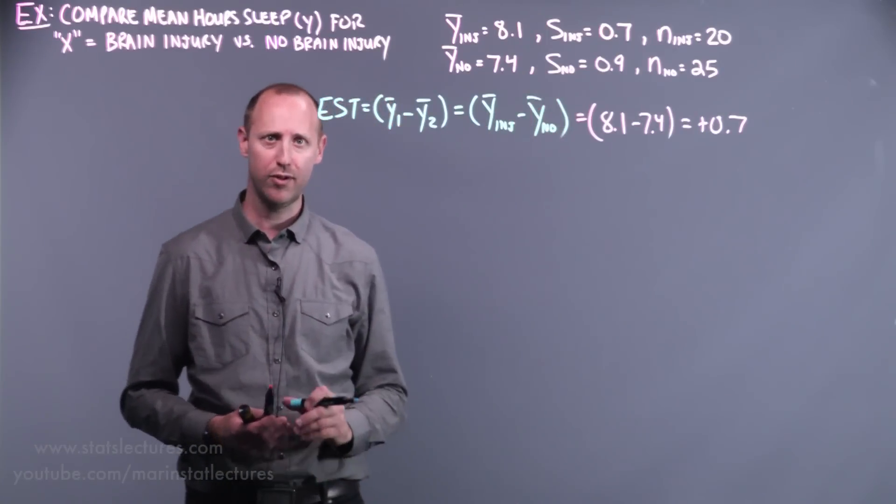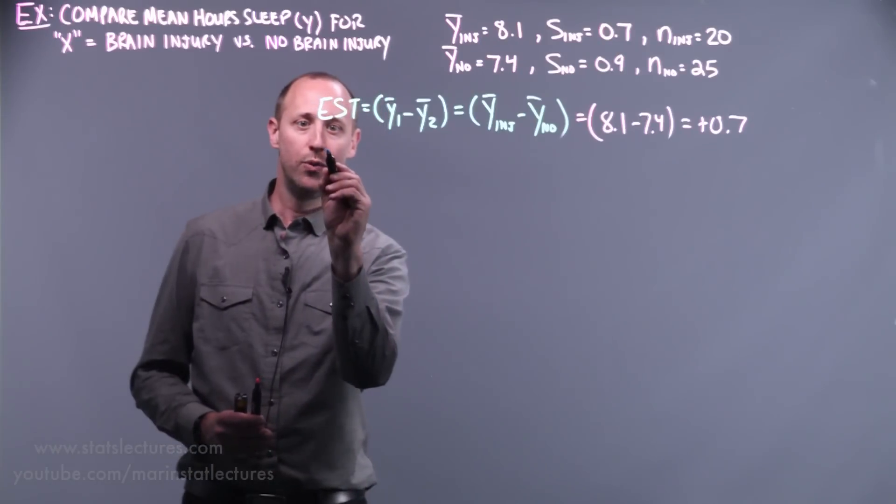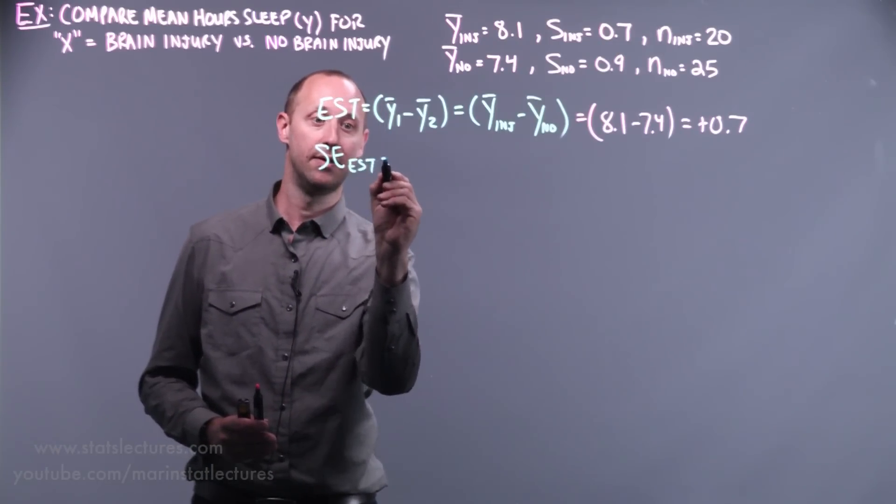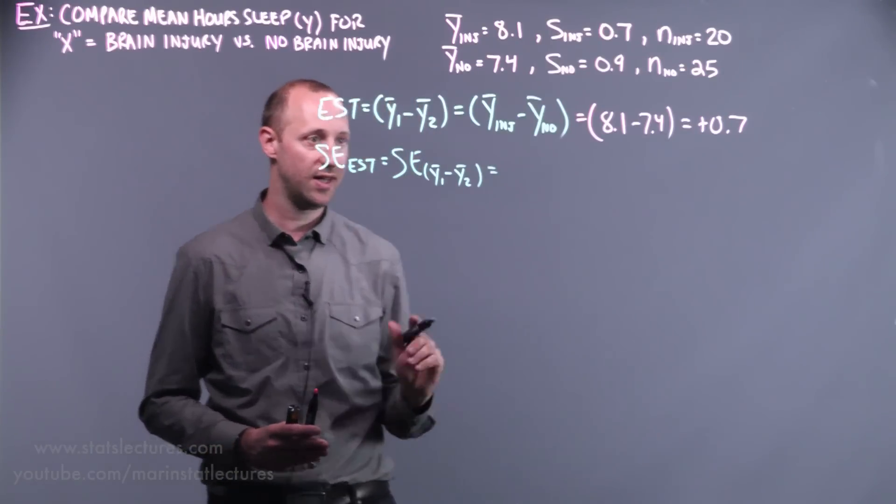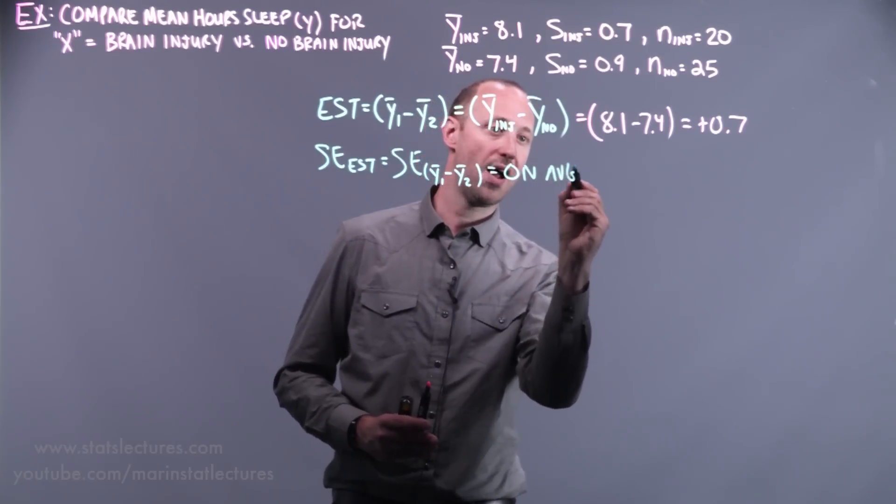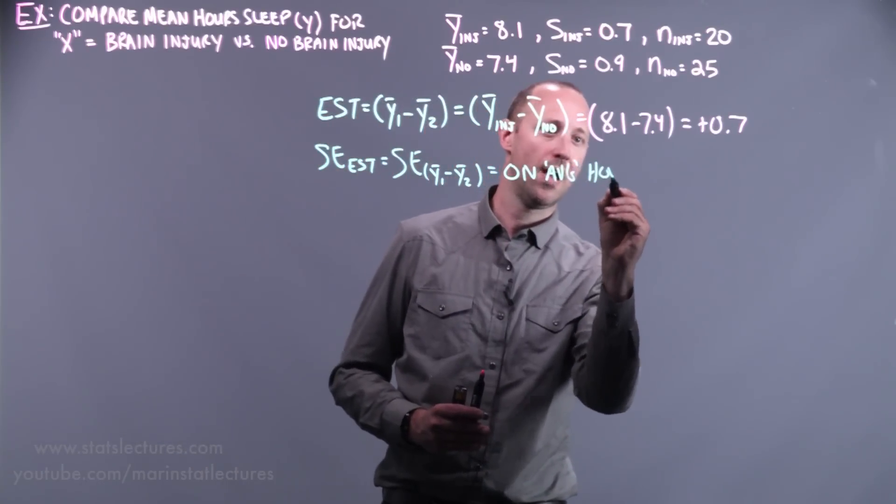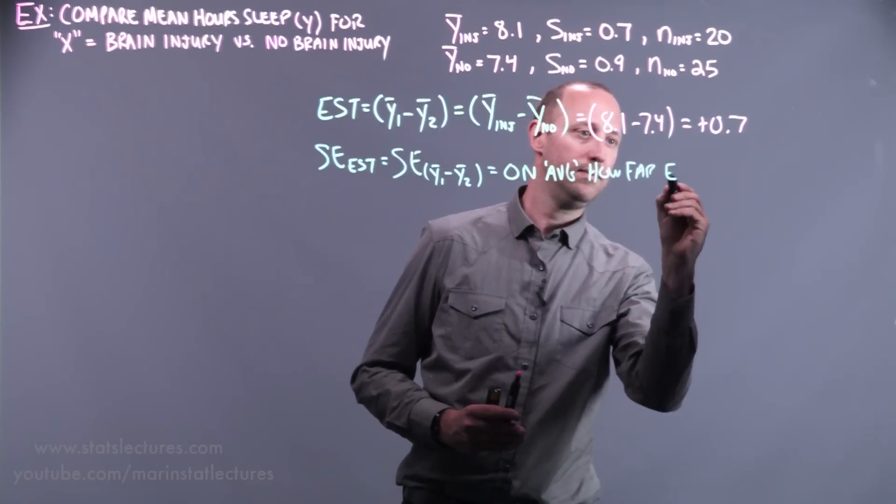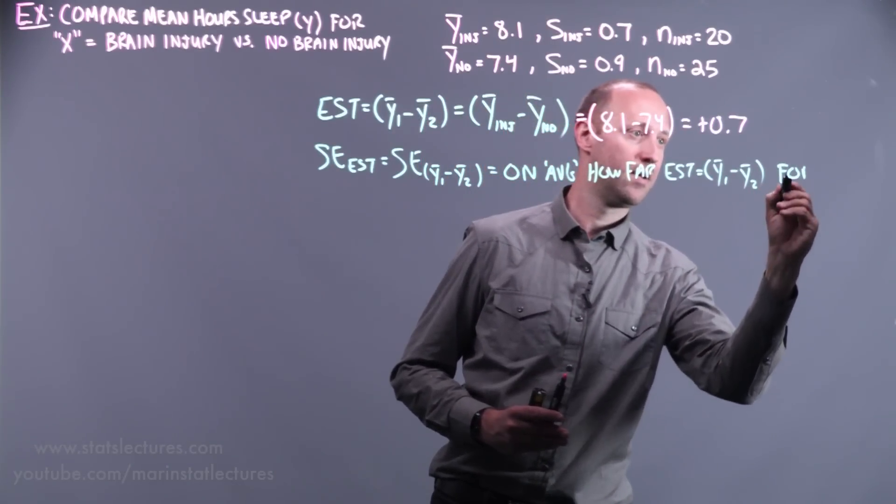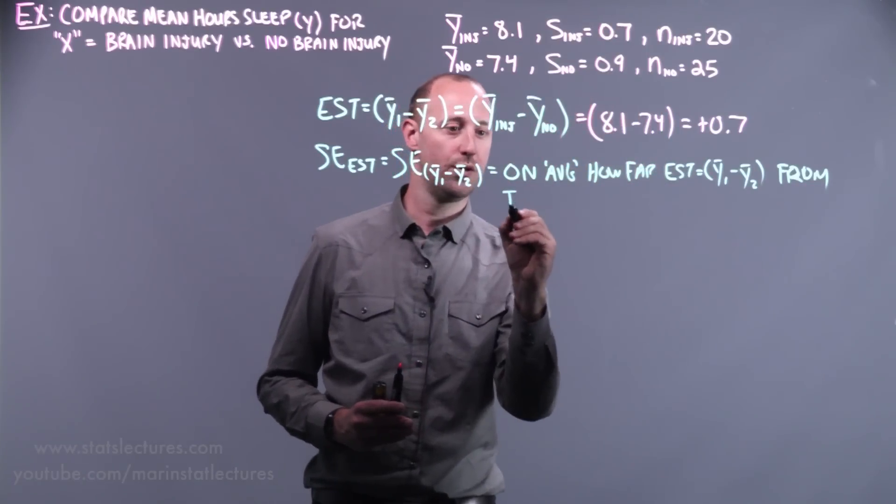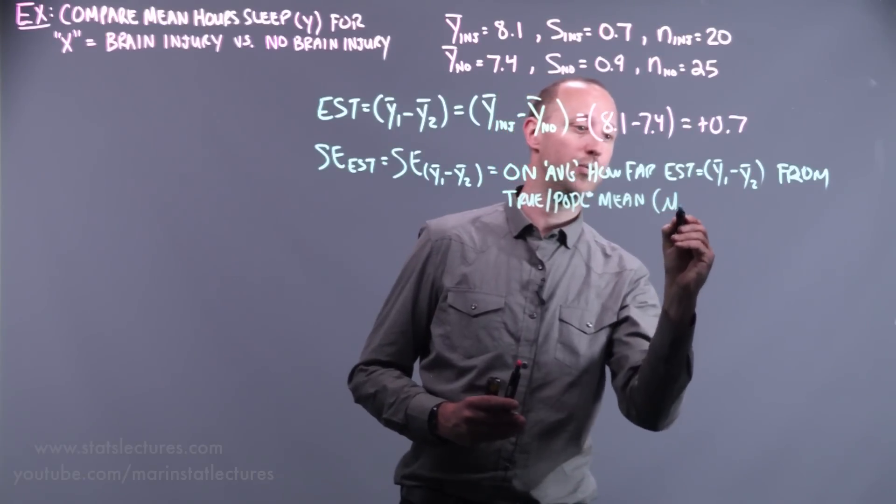Our estimate is that the brain injury group is sleeping about 0.7 hours more on average than the non-brain injury group. Of course, this is just an estimate. We've learned to think of estimates as one of many we could end up getting. If we got a slightly different set of individuals, we'd get a slightly different estimate. So we need to know something about the standard error of the estimate, or in this case, the standard error for the difference in means. This is going to help us know on average how far is the estimate, the sample difference in means, going to move from the true, or the population mean, difference μ1 minus μ2.